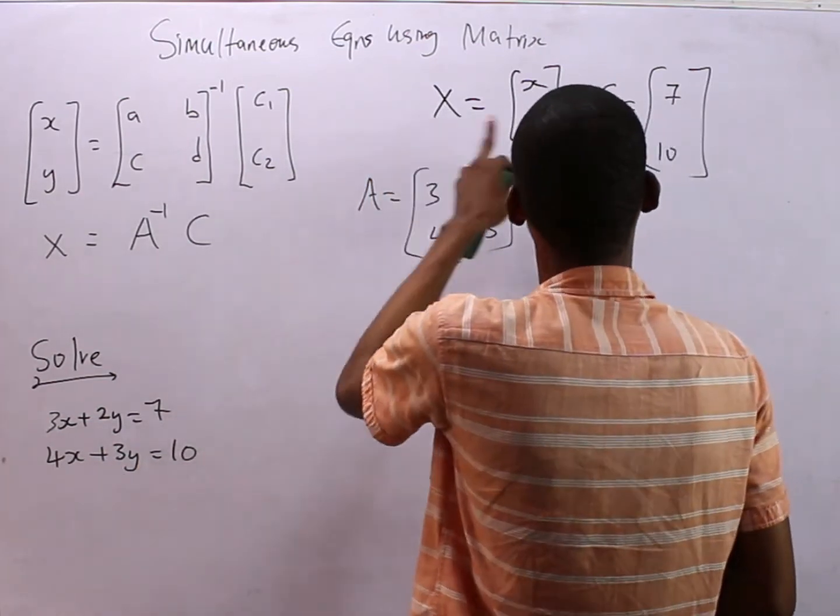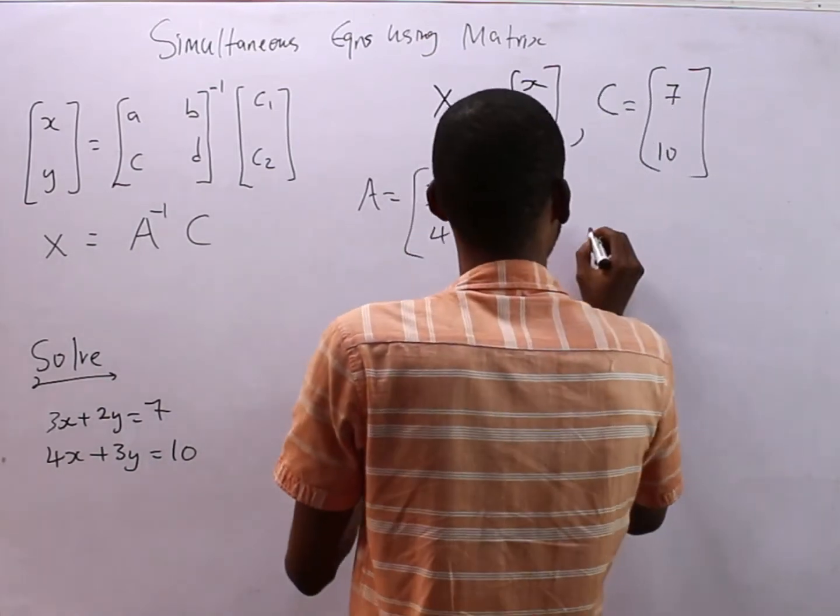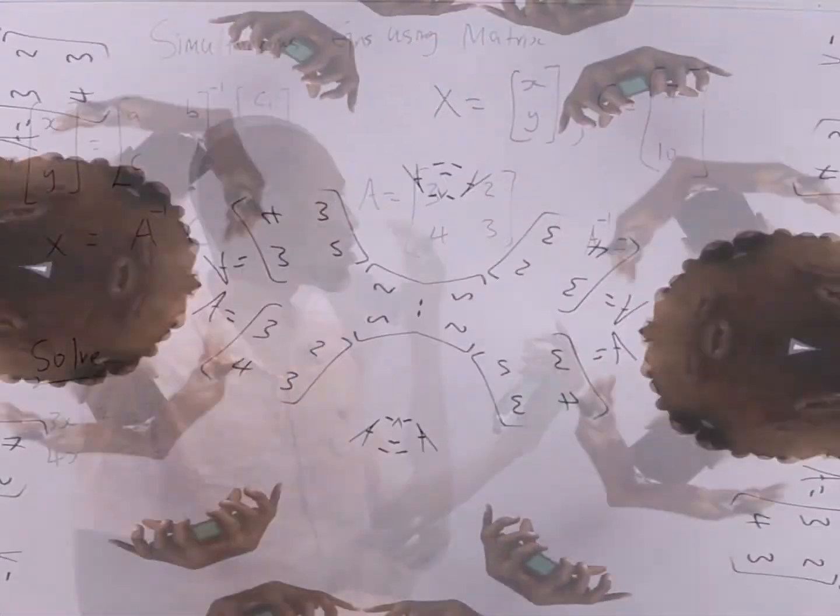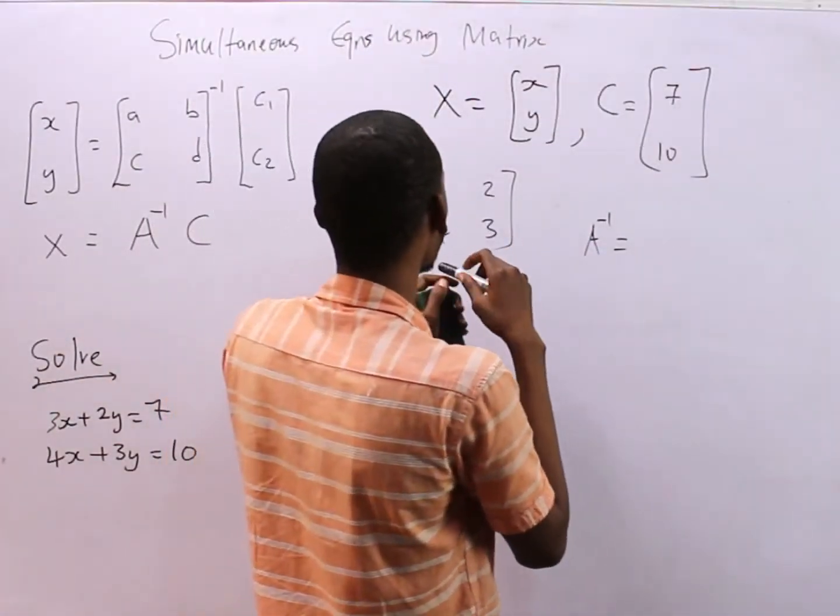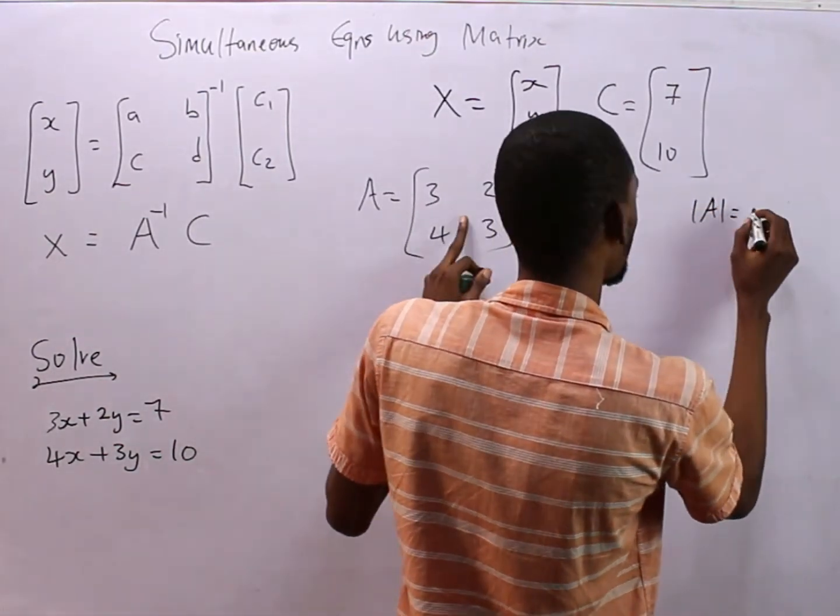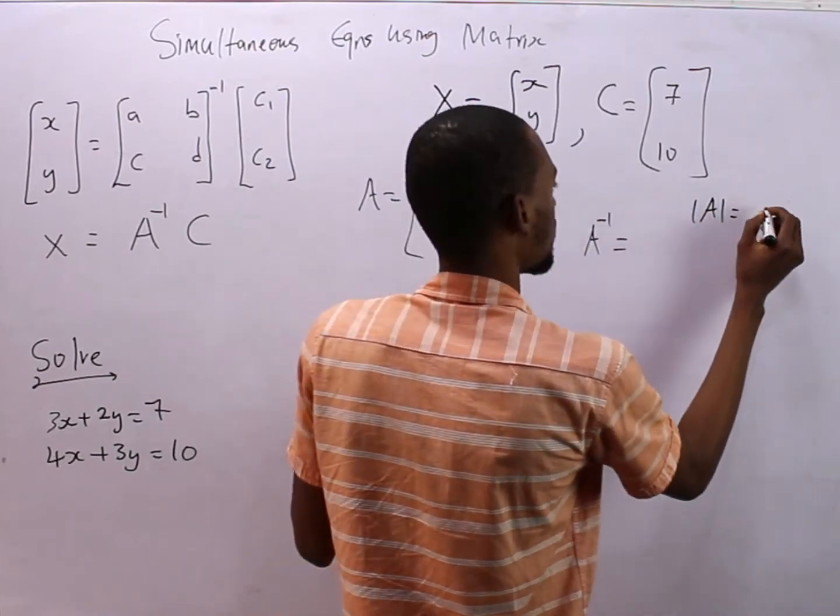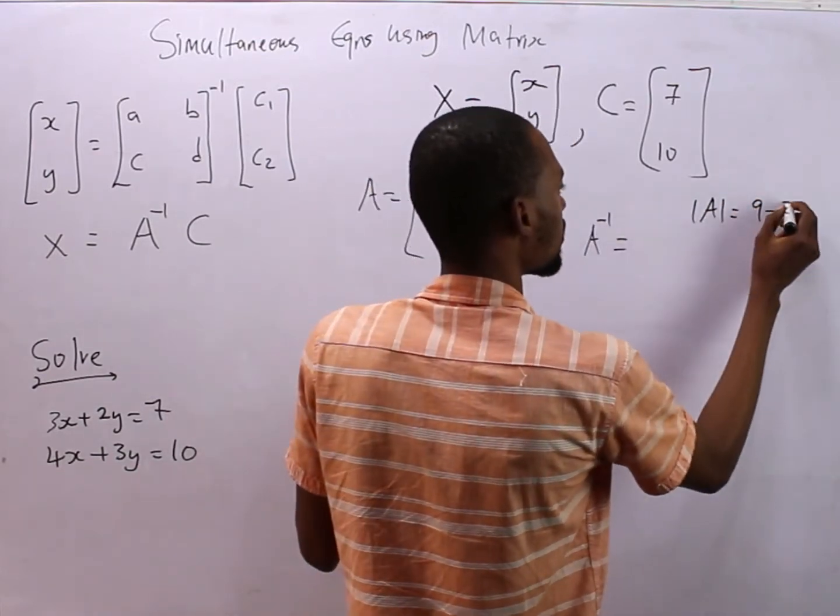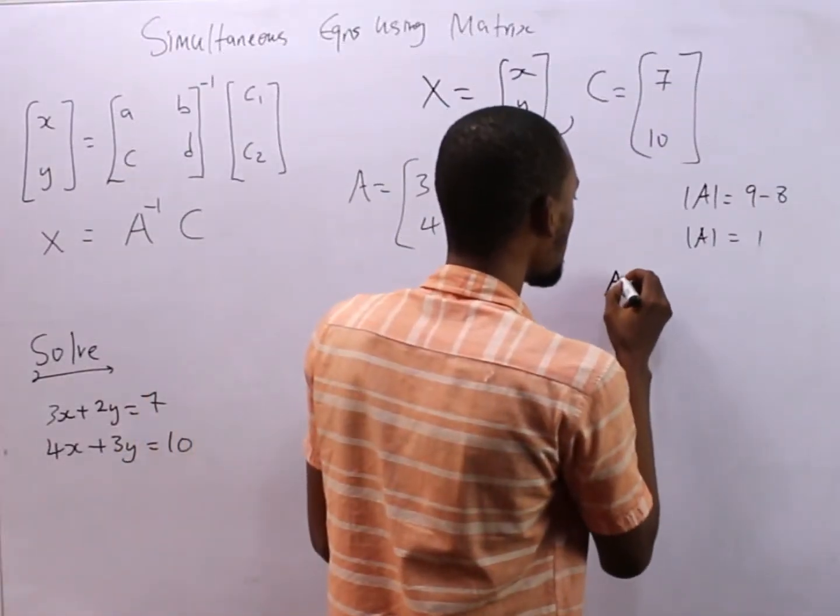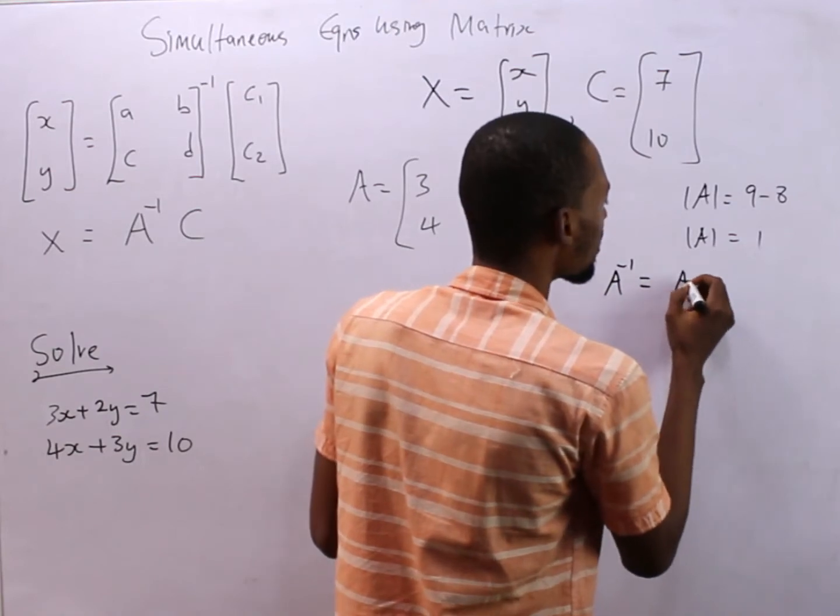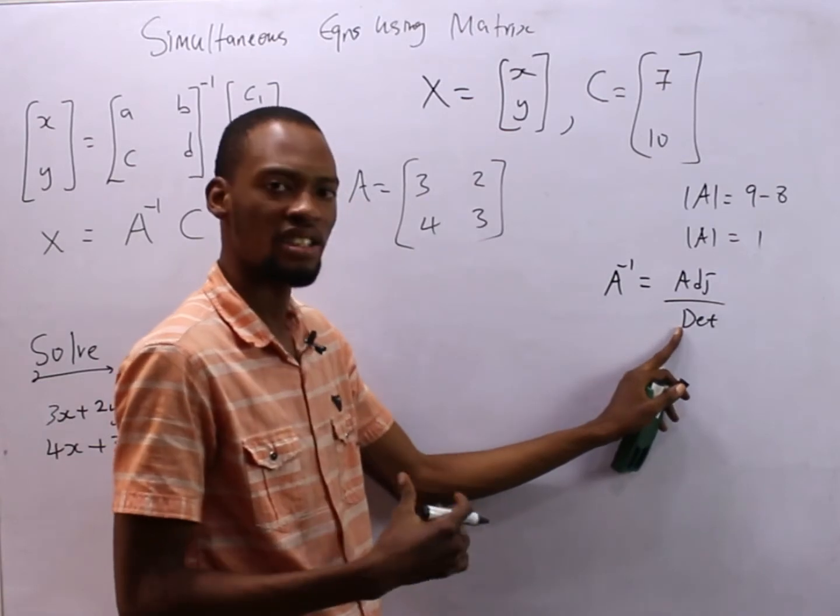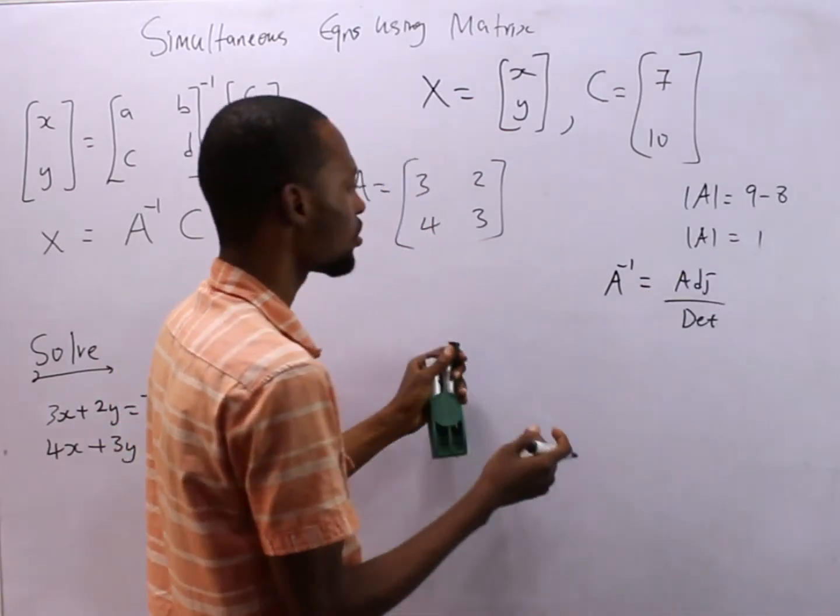We've gotten X, we've gotten C, and we've gotten A. How about A inverse? A inverse is simply the inverse of 2 by 2 matrix. The inverse is, we find the determinant first. So the |A| is simply 3 times 3, which is 9, minus 4 times 2 is 8. So the determinant is 1.